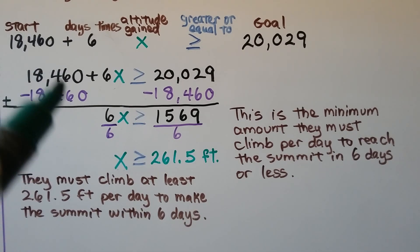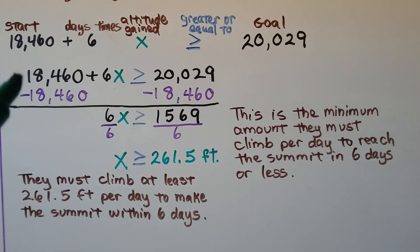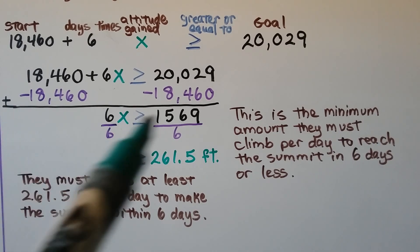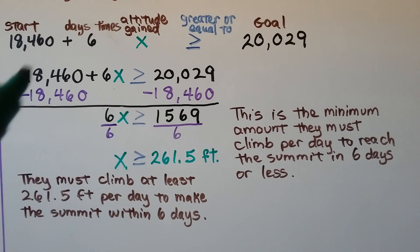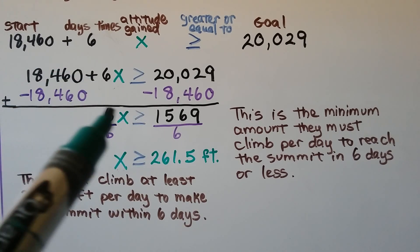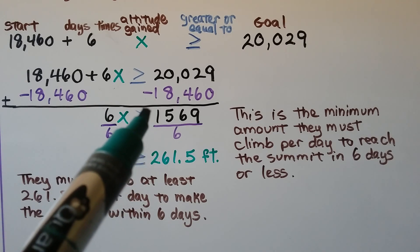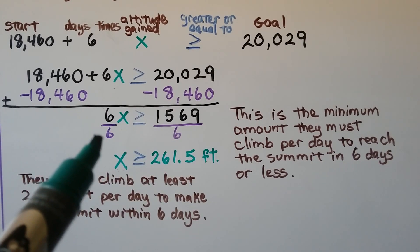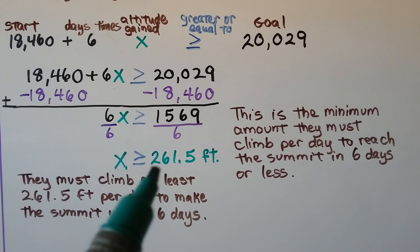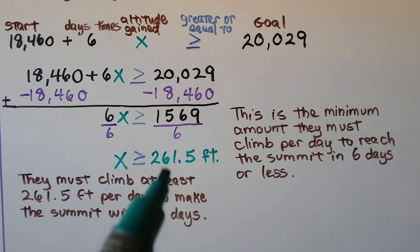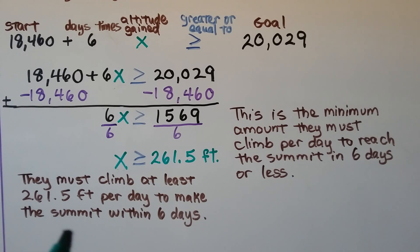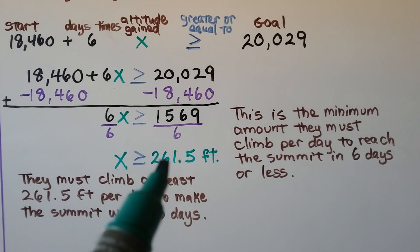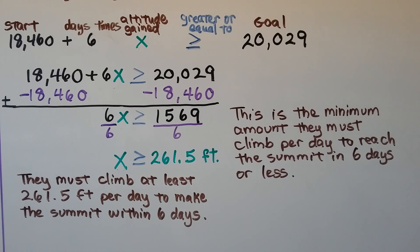We create a zero pair using additive inverse — add a negative 18,460 to both sides. This becomes zero, and we're left with 6x is greater than or equal to 1,569. Because this is multiplication, we use division as the inverse operation. That creates 1x is greater than or equal to 261.5 feet. So they must climb at least 261.5 feet per day to make the summit within 6 days. They could climb more — say 300 feet per day — and still make it within 6 days, just arriving a little earlier.